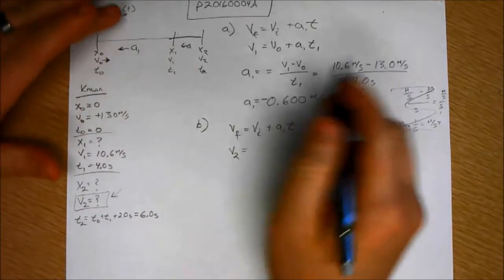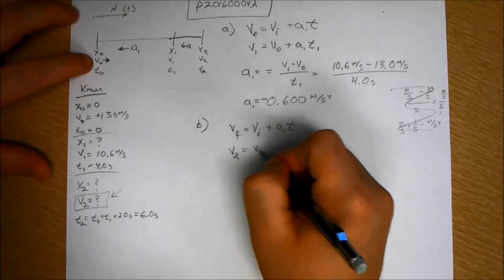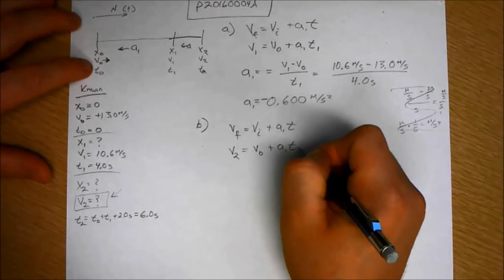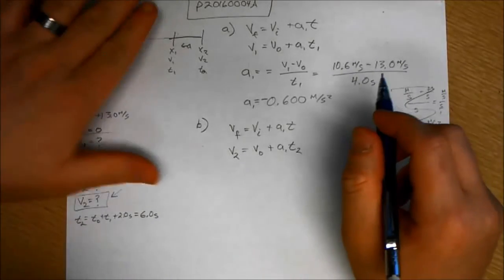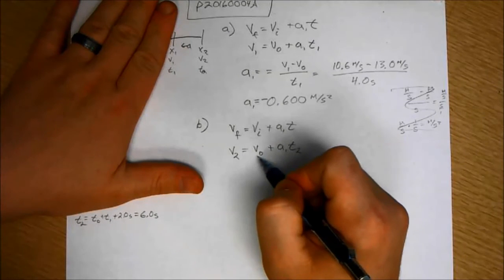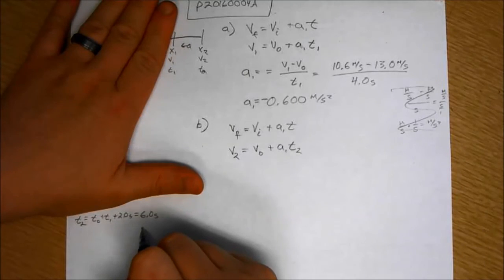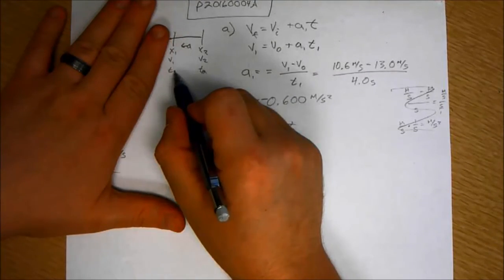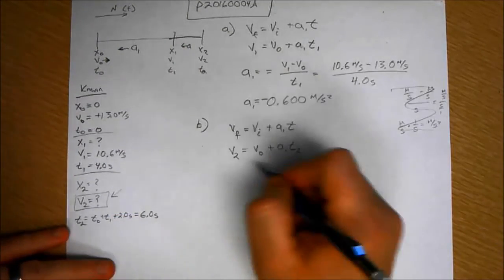So V final is now V2 equals V initial. Now you can do it differently. I'm going to say the initial is over here at V0 plus A1T2. You could do this differently. You could say forget this part of the problem. Let's say initially the initial is V1. All right, that's fine. But then T2 cannot be six seconds. It's going to have to be only two because two seconds, T2 minus T1 is two seconds.